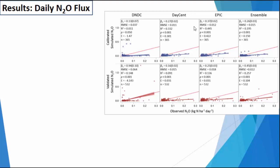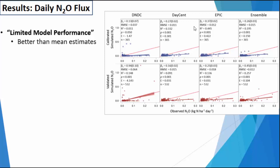These are the results for our daily N2O flux, and I would characterize this as more limited model performance. It's still better than mean estimates, at least in the case of DASINT, EPIC, and the Ensemble, because the E-statistic is greater than zero — modeling efficiency is better than observed means. However, DNDC didn't do a very good job of predicting N2O, which may be an artifact of how it's calibrated. At least DASINT, EPIC, and the Ensemble are doing pretty well. They have a high and significant correlation with the observed data, and daily N2O is typically very difficult for models to capture — so compared with literature values, these are actually pretty good.